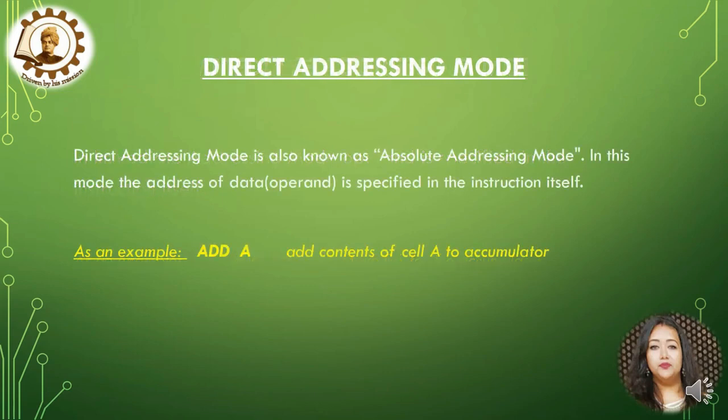Direct addressing mode is also known as absolute addressing mode. In this mode, the address of data is specified in the instruction itself, such as ADD A, which means add contents of cell A to the accumulator.